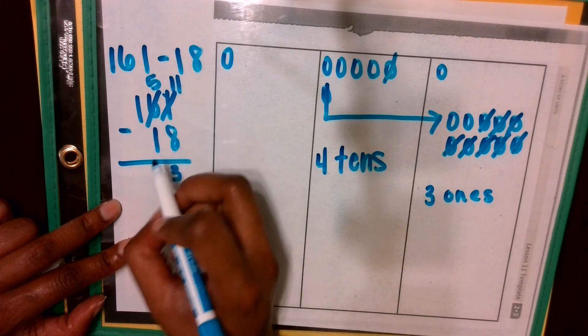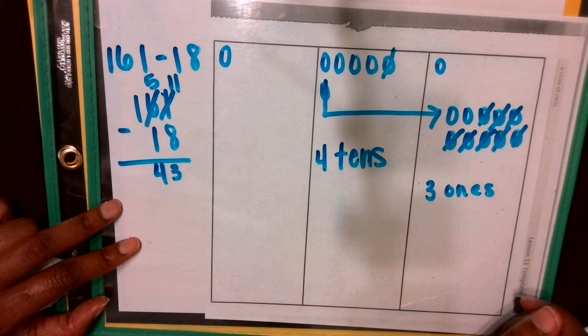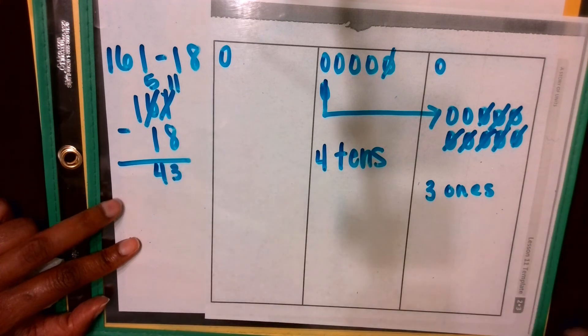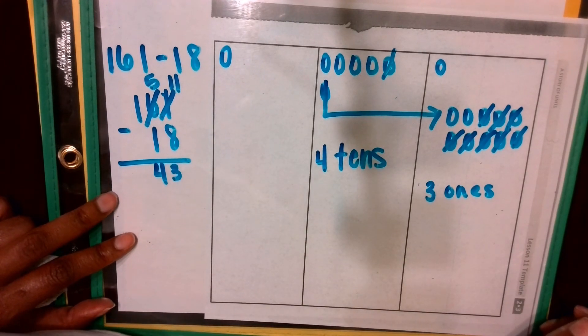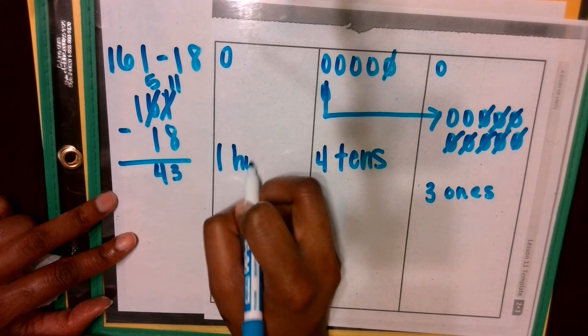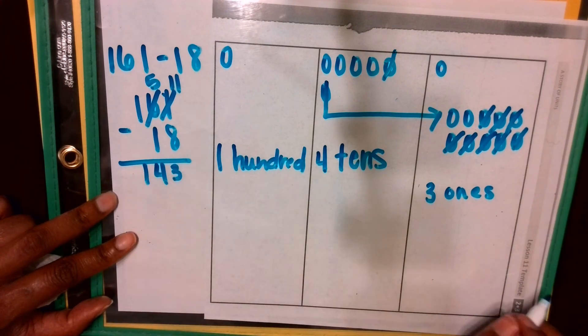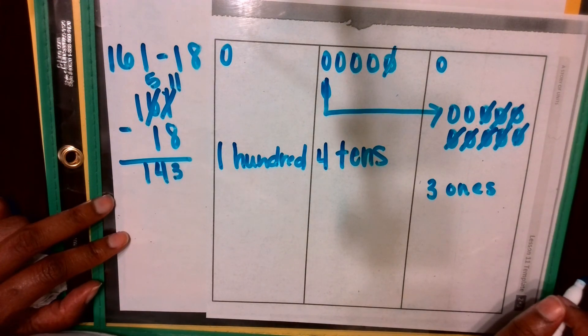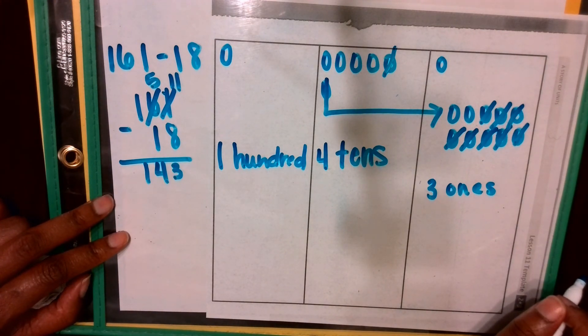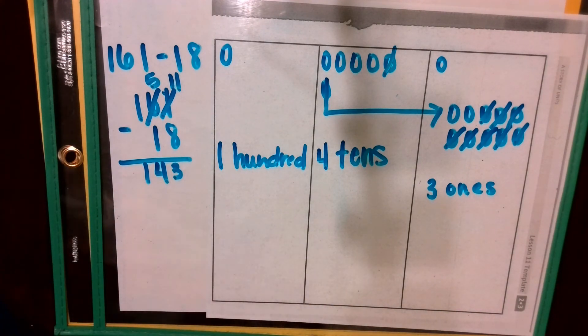Great job, and I will show it in my vertical form. Will I subtract or need to unbundle any hundreds? No. I don't, so I can just bring that one down. 100. What is 161 minus 18? Great job, 143.